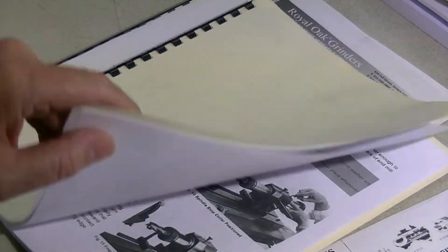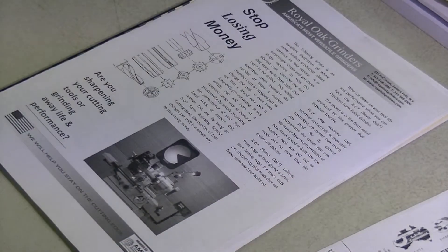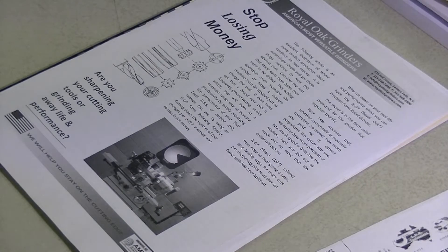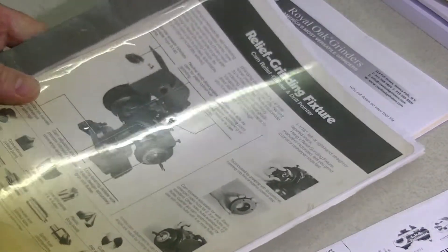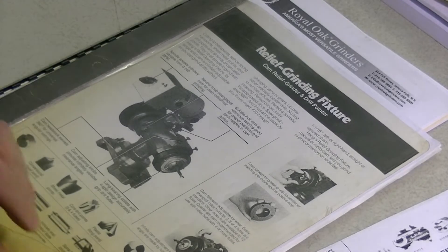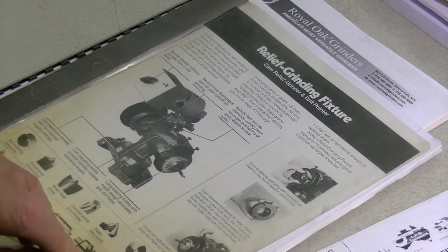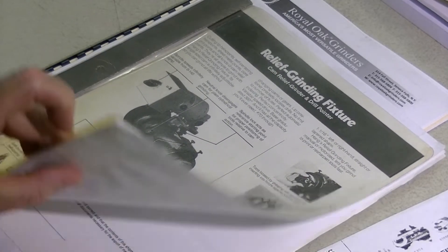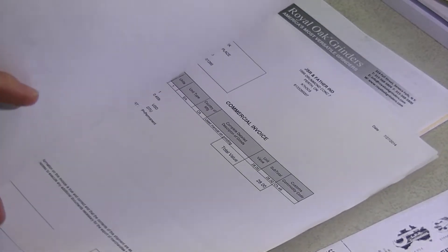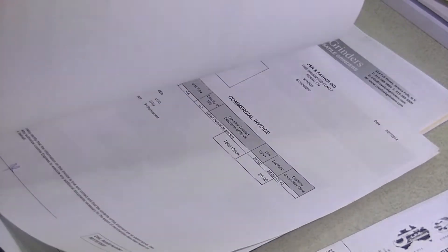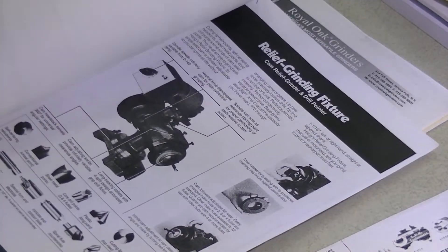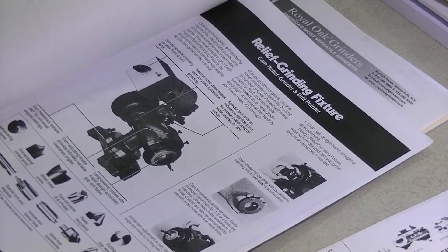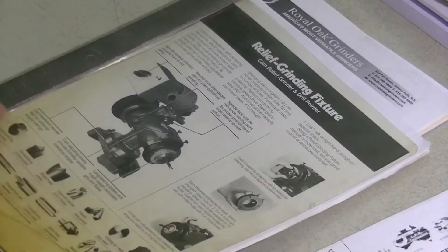A lot of good information in that. Once again, that was an eBay buy. Good value, I don't mind buying things. Now here's a manual for a relief grinding fixture similar to the machine I have, from the Wood Company over in Perth. On cam grinding. Another good buy.